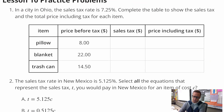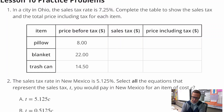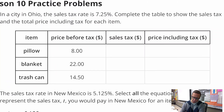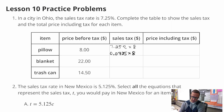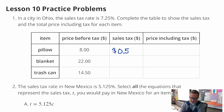So when we do this, we're going to do 7.25% times $8. We've got to change that to a decimal, and then you're going to multiply that by 8. I think that comes out to 58 cents. And so if you add that to $8, you get $8.58.